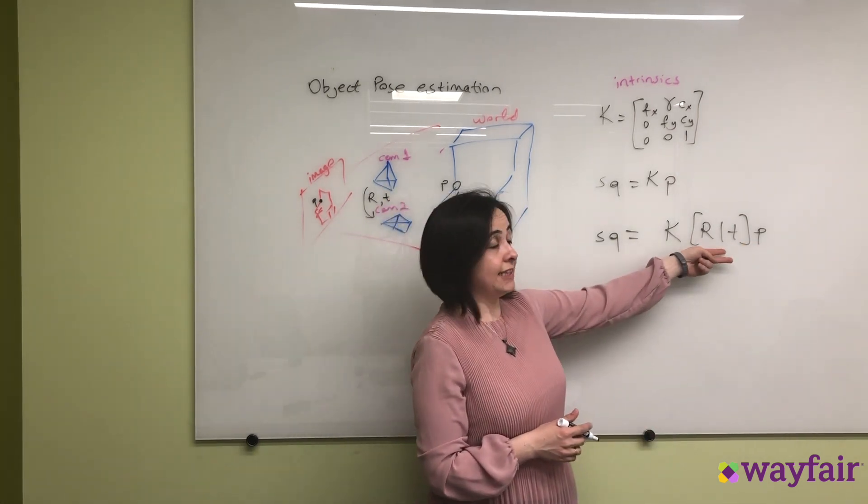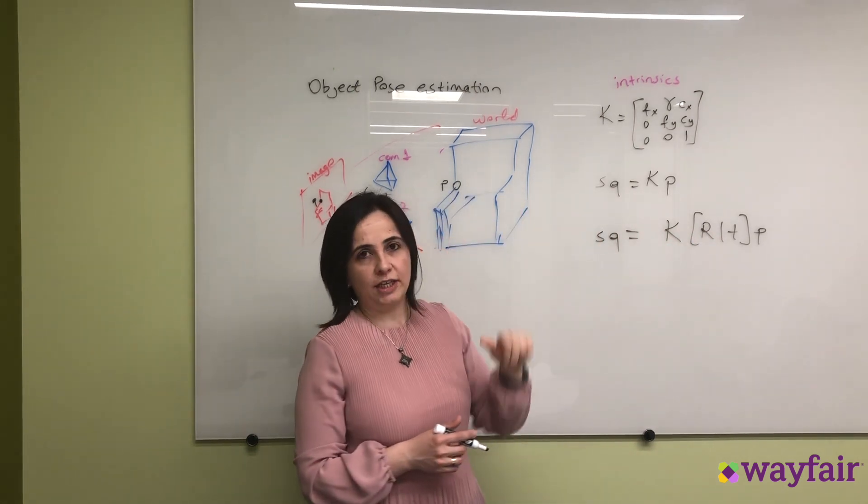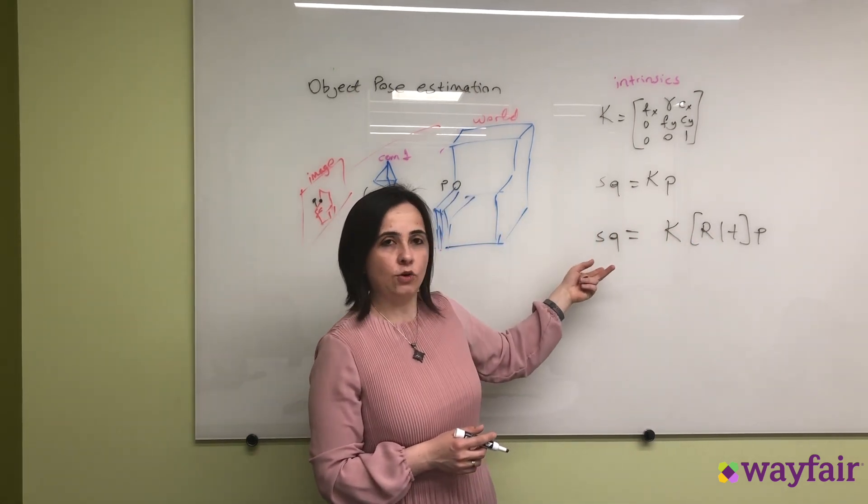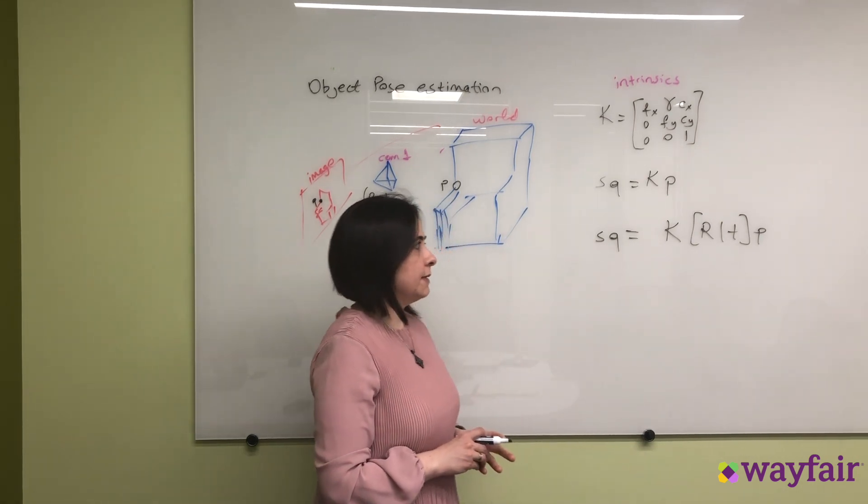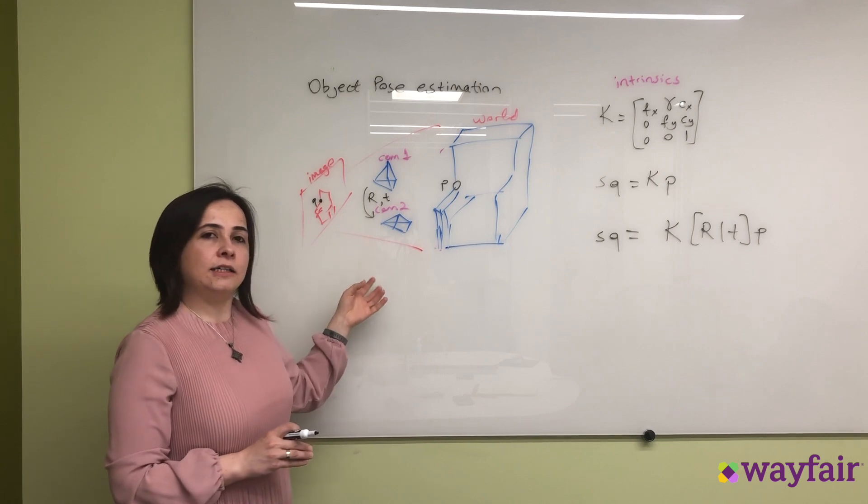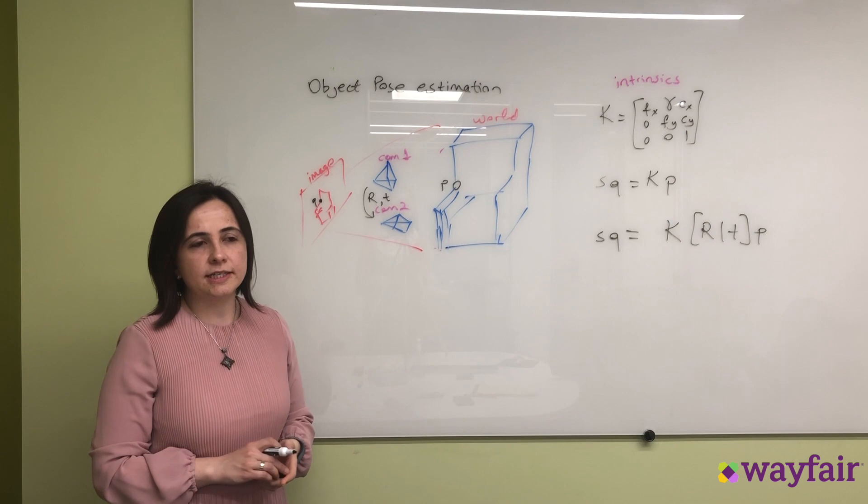In order to find that, we need three correspondences between 3D and 2D points. Given these 3D correspondences, we can solve this equation. The most important point at this stage is how do we get these correspondences.